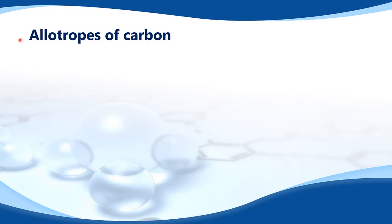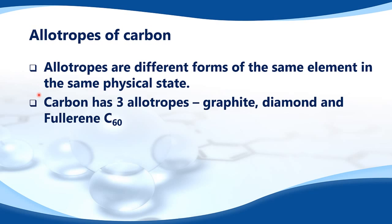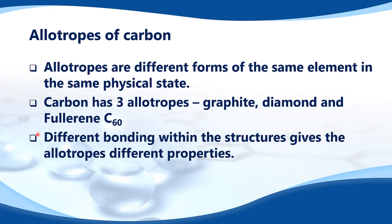In this video, we look at the allotropes of carbon. Allotropes are different forms of the same element in the same physical state. Carbon has three allotropes: graphite, diamond, and fullerene C60. Different bonding within the structures gives the allotropes different properties.